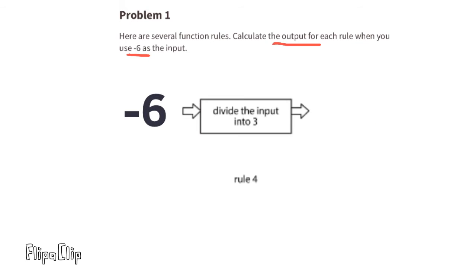The input is negative 6. The function is divide the input into 3. That means how many times does negative 6 go into 3? Or 3 divided by negative 6. The output is negative 1 half.